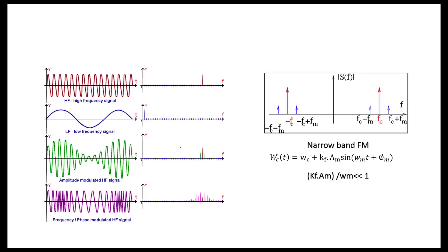Let's see what is happening in the frequency domain. We have our carrier and our data or message at a low frequency. For AM modulation, we only need a very small bandwidth. But when we check the spectrum of the FM signal, we have high bandwidth — there are different spectral components at different frequencies with different amplitudes. This shows that for FM modulation we need a high bandwidth.